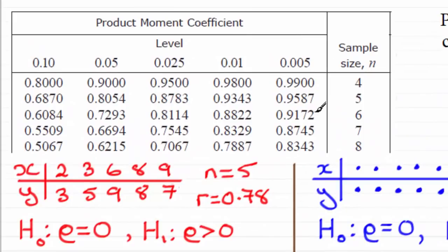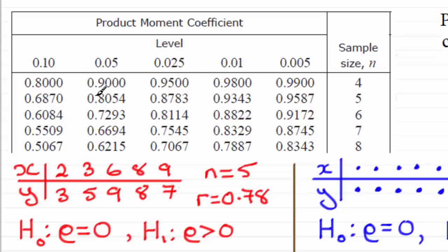We get the critical value from tables. You'll find them at the back of your statistics textbook, or you'll be given a formula book in your exam. In the sample size column we have n, and across the top in the level row we have various decimals representing percentages: 10%, 5%, 2.5%, 1%, and 0.5%. Underneath each level are the critical values for various sample sizes at certain percentage significance levels.